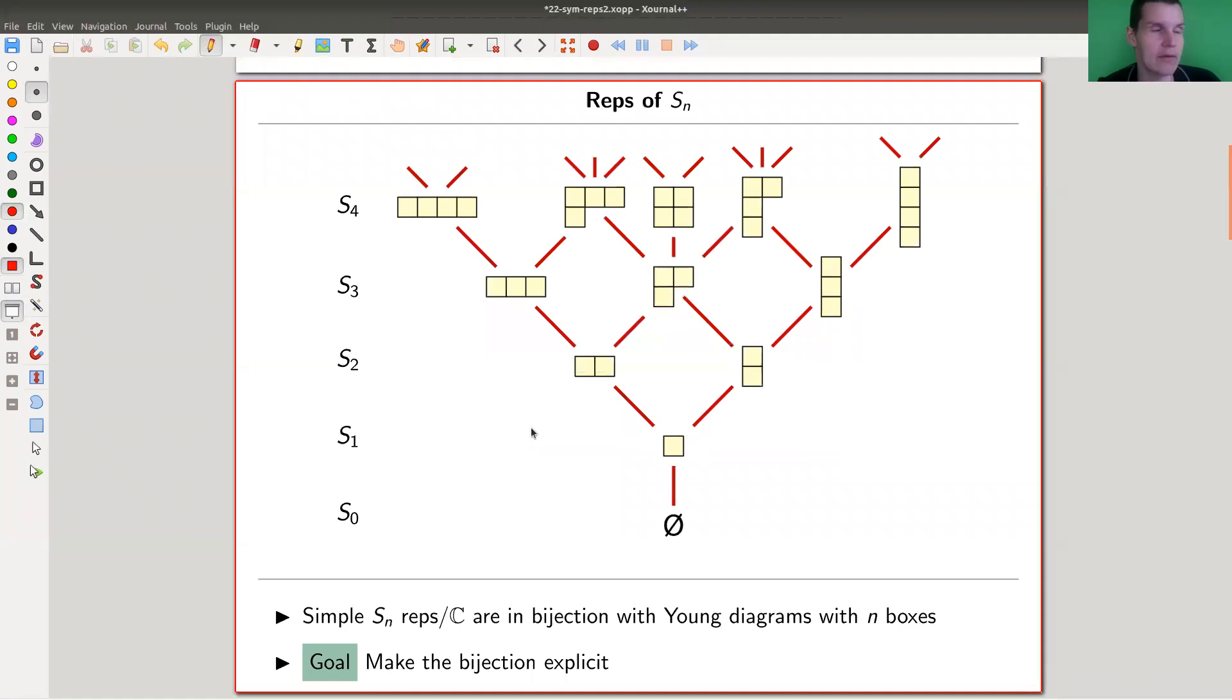As a reminder, the representations, the simple ones—my ground field here will be C—are indexed by those arrangements called Young diagrams. So S3, for example, has the three partition, the two plus one partition, and the one plus one plus one partition, illustrated in these Young diagrams.